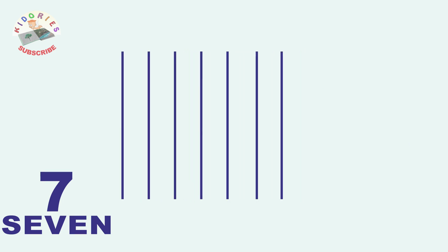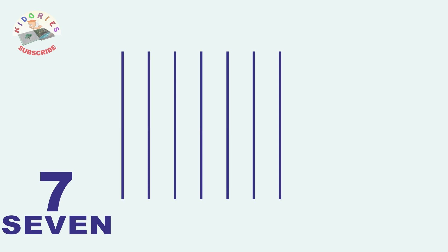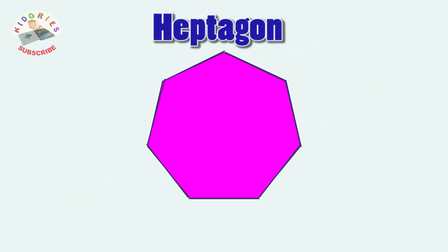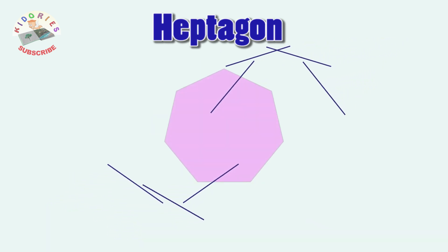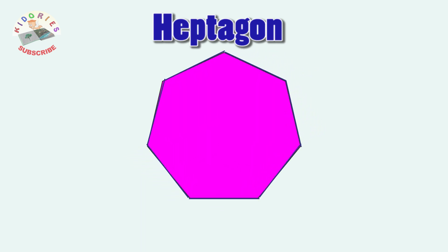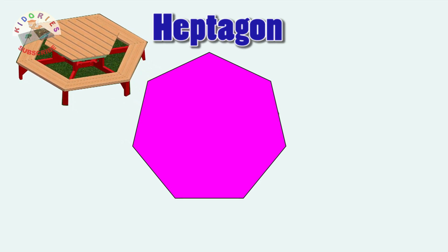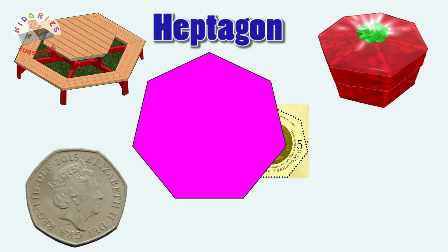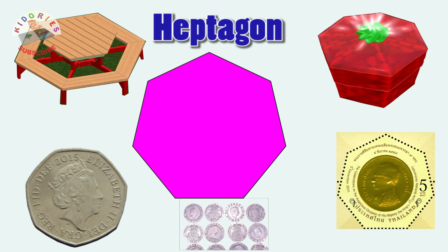Seven lines, seven lines make a heptagon. Heptagon shape represents a trampoline, a gift box, and a coin.